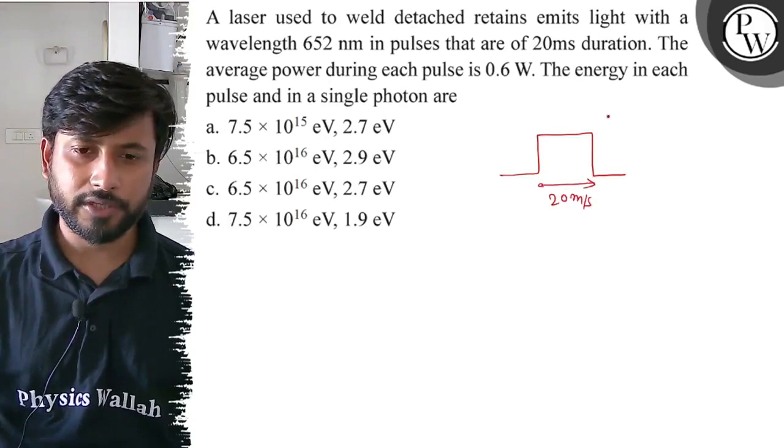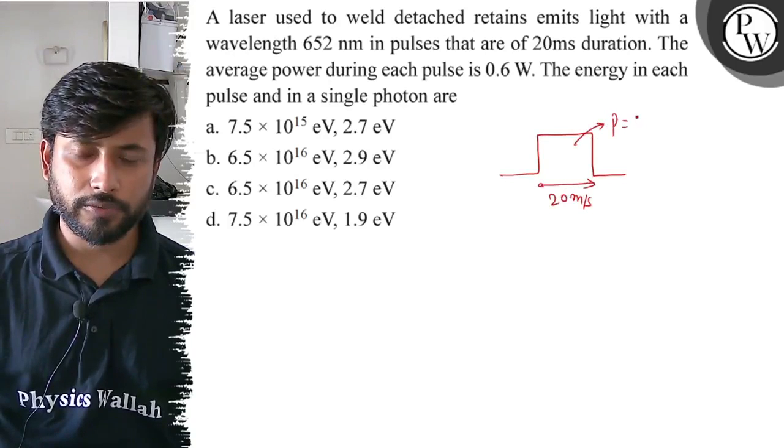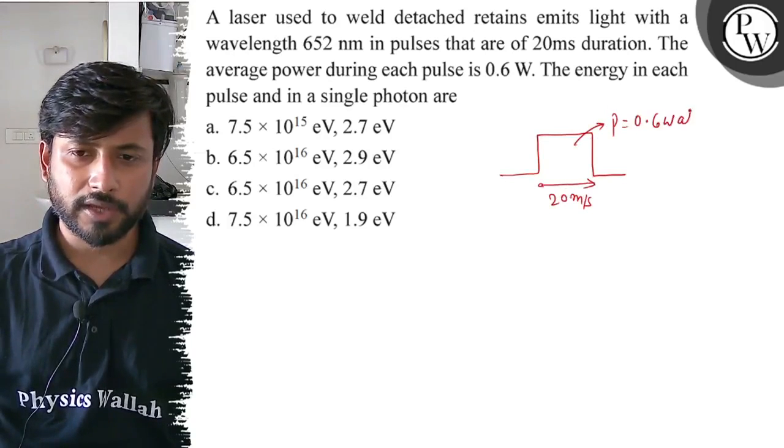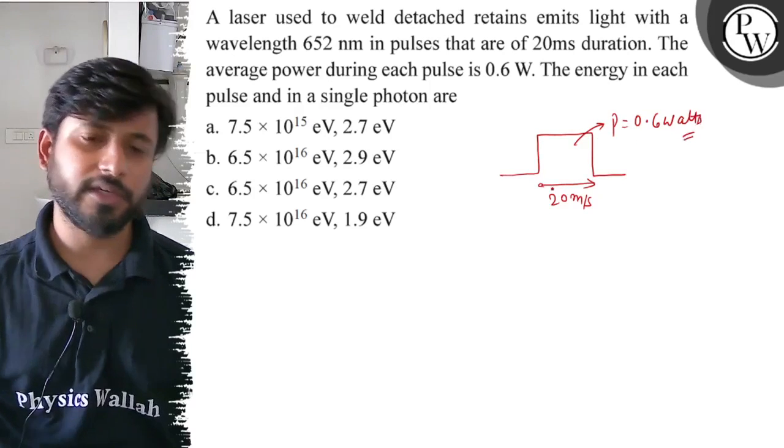The average power during each pulse is 0.6 watts. The energy in each pulse and in a single photon is: